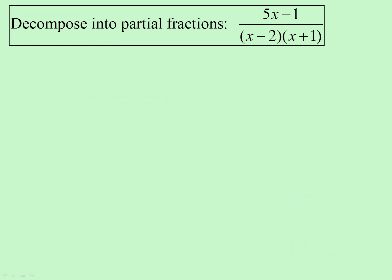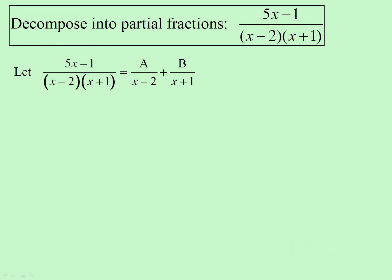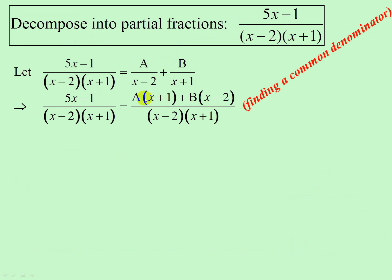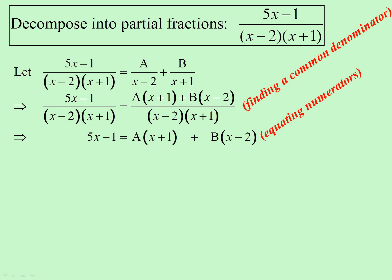Let's do an example. Linear factors: x minus 2 and x plus 1. We're going to take the fraction and divide it into two fractions with capital A and capital B representing numbers. The first thing we'll do is find a common denominator. Because that fraction equals that expression, we can equate just the numerators — which is useful, as it leaves out all the extra denominator work.